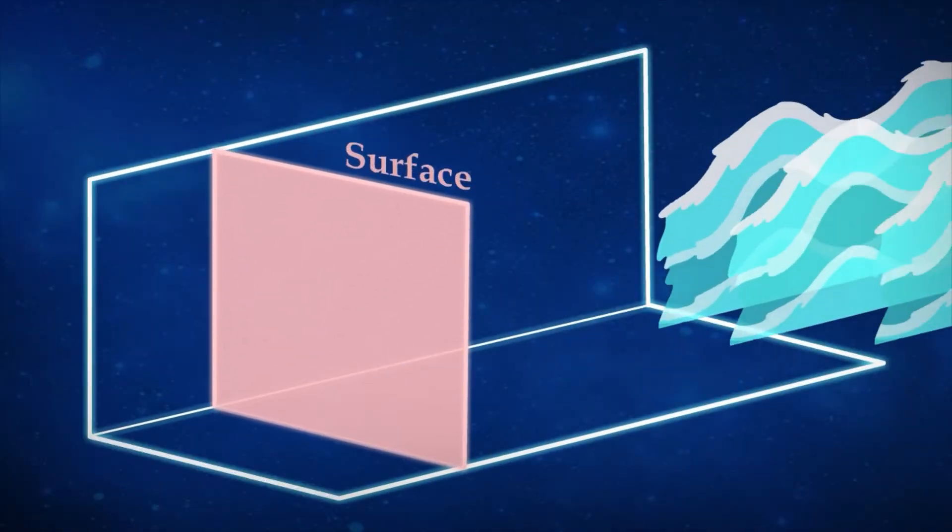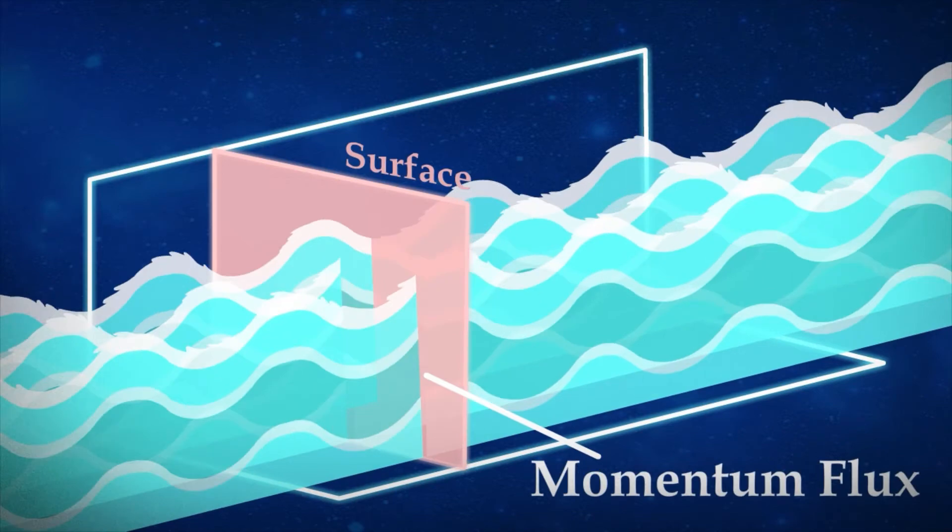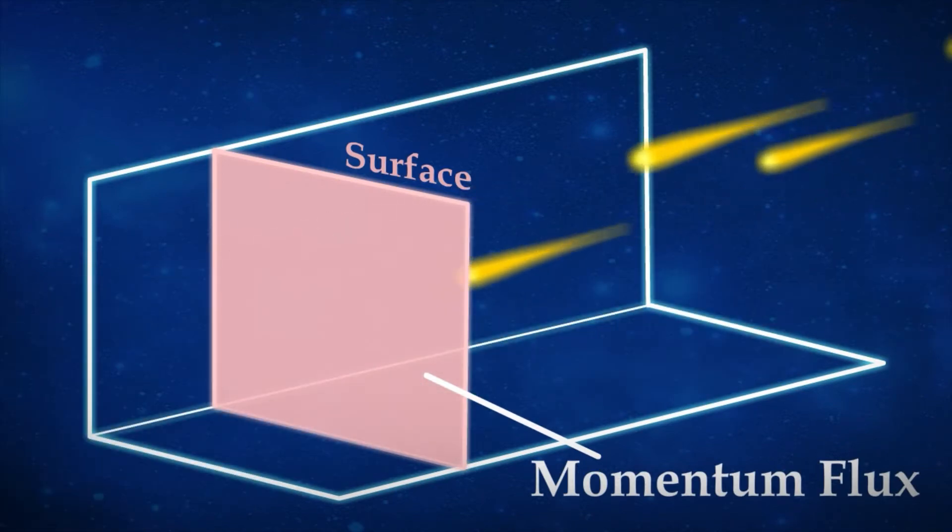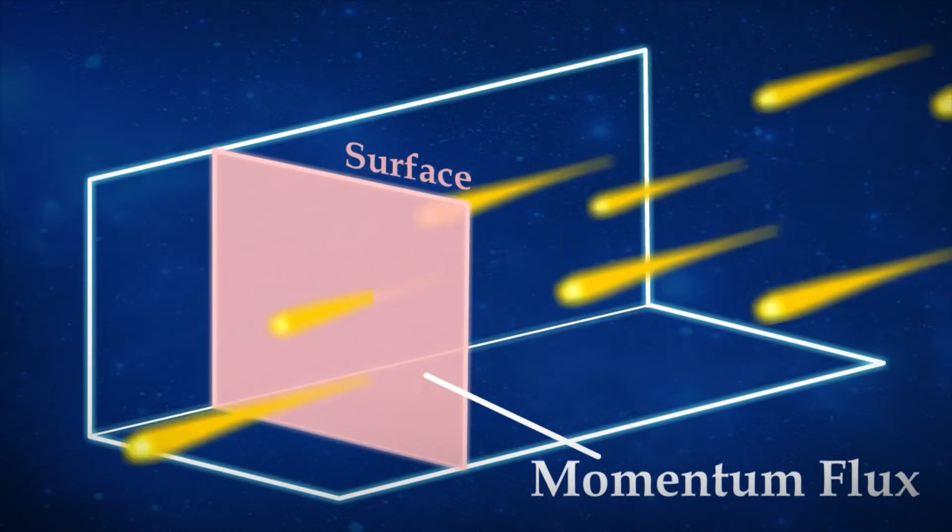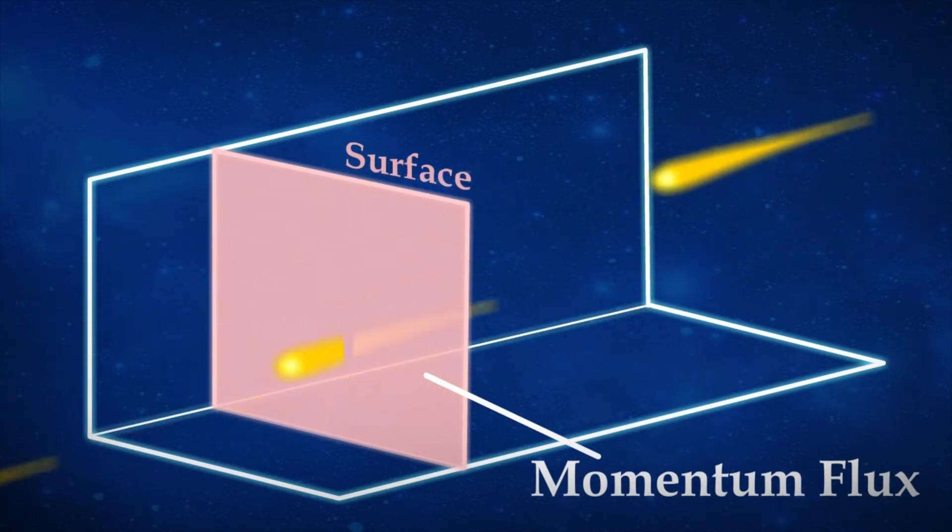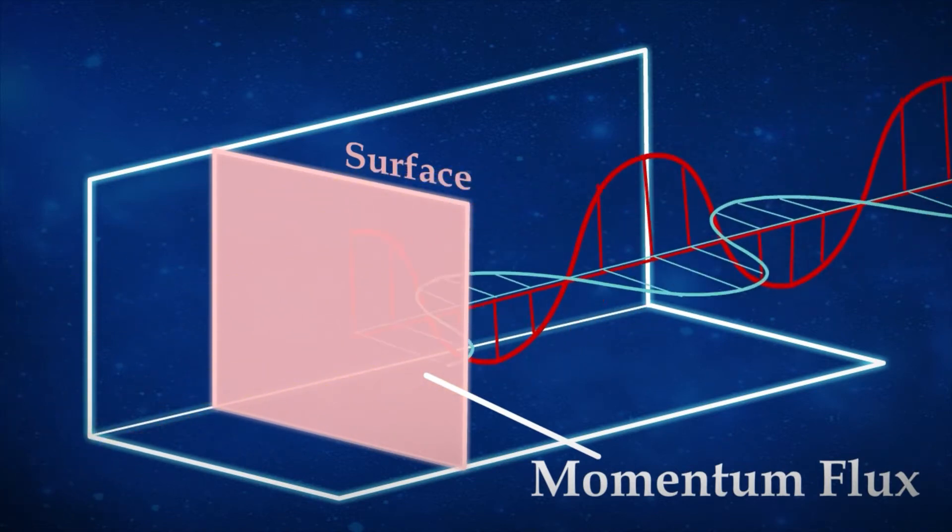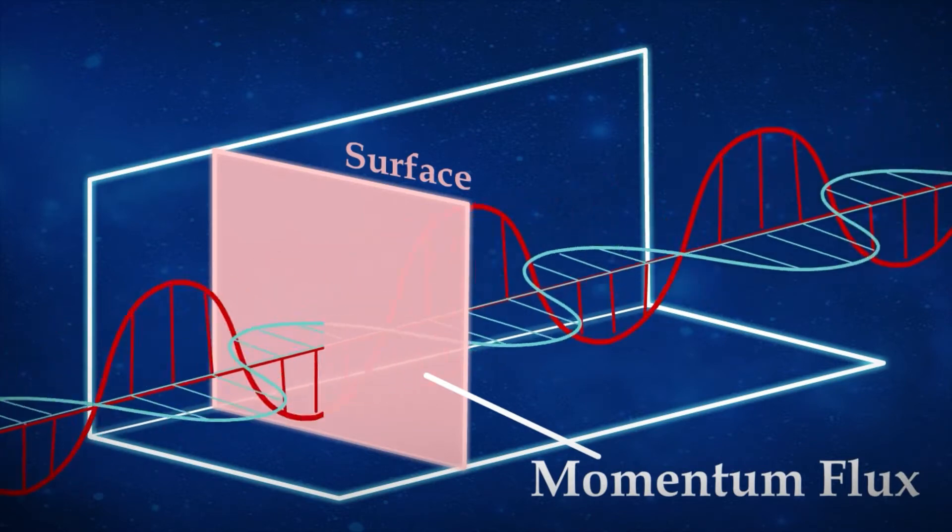It is well known that both fluids have momentum flux when crossing a surface, and so do photons. Therefore, there must be momentum flux for all electromagnetic waves crossing a given surface.